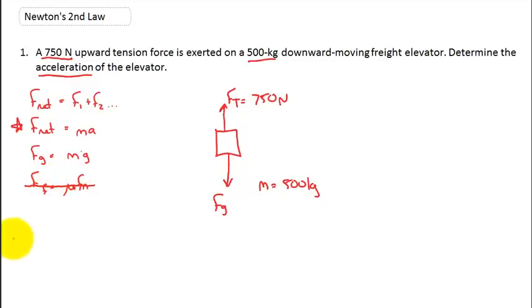Anytime I see the force of gravity, well, we do have the mass. The mass is given for us, and we also know that the acceleration due to gravity is negative 9.8 meters per second squared. So force of gravity is going to be equal to mass times acceleration due to gravity. And let's just keep working this out, guys. That's going to be 500 kilograms multiplied by the acceleration due to gravity, negative 9.8 meters per second squared.